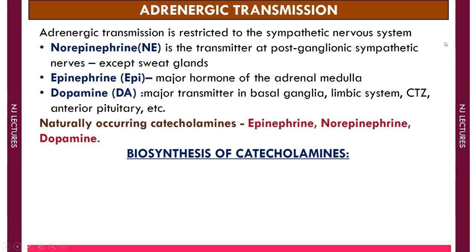Norepinephrine is the principal neurotransmitter in the sympathetic nervous system. It is the transmitter at the post-ganglionic sympathetic nerve endings, except at the sweat gland.